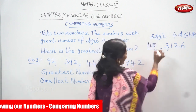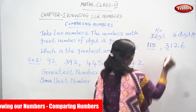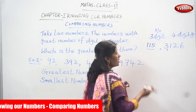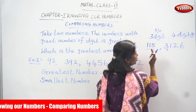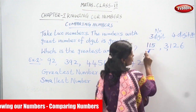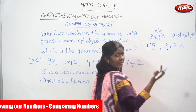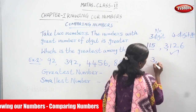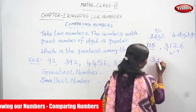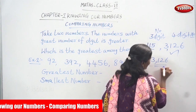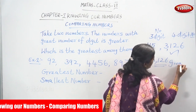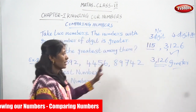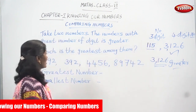So we have a four-digit number and a three-digit number. Comparing these two, which is the greatest? This four-digit number is greater. Three thousand one hundred and twenty-six is the greater number. Now you understand the first example.